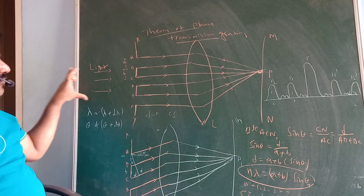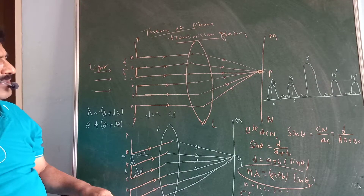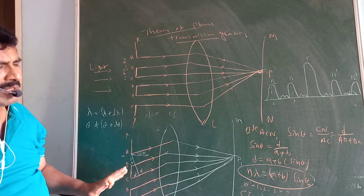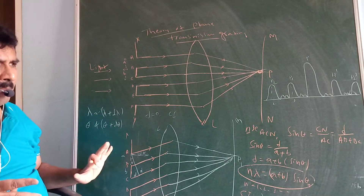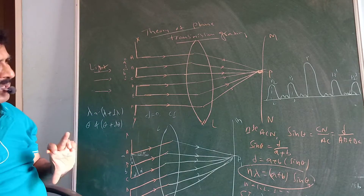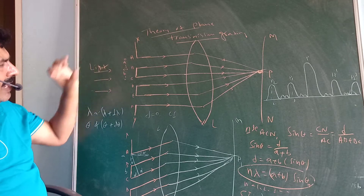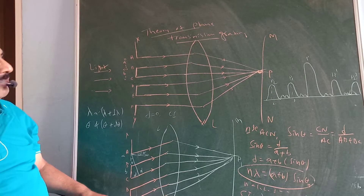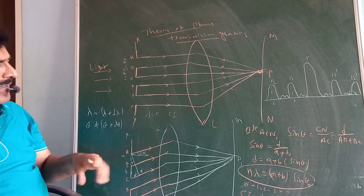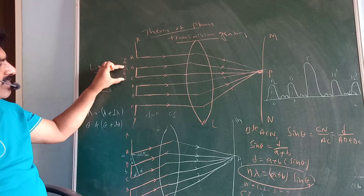Light from the source is incident on the grating. Here XY is the plane transmission grating with multiple slits A, B, C, D, E, F, etc. One of the slits has width denoted by small letter 'a' and the opaque part is denoted by small letter 'b'.